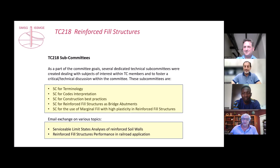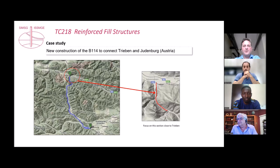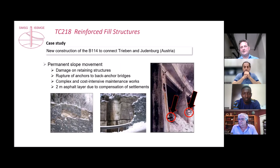The case study is a very impressive project in Austria — the new construction of road B114, connecting Treben to Stuben in the Austrian Alps, looking at the section close to Drewen. This was a very important connection between those settlements but there were big issues with the existing road section.